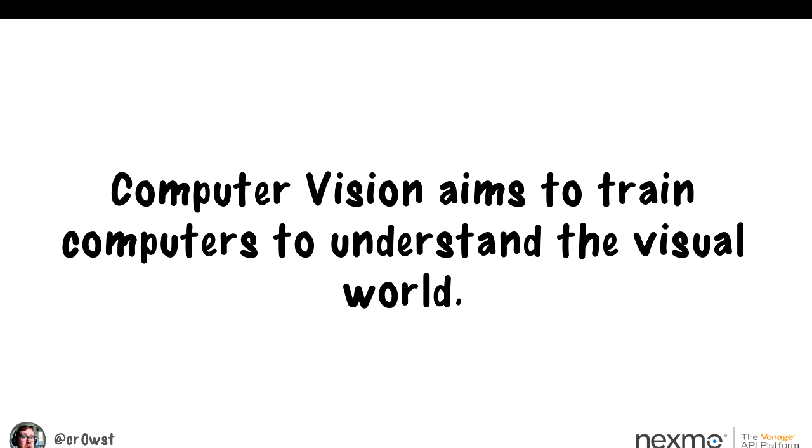That's where computer vision comes in — we're trying to teach computers how to understand the visual world. We do this to offload work: maybe we want self-driving cars that can see road signs, other cars, and lane markings. For those who might not be able to see, there are apps that can point at something and say 'this is a cup' or 'this is a bottle of water.' There's even an app being developed that converts sign language into text or speech. It has a lot of uses — but we're just going to play around with playing cards.